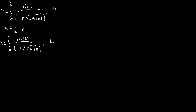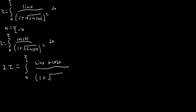So if we solve for 2i we're going to get the integral from 0 to pi over 2 of sine x plus cosine x, all over 1 plus square root of sine of 2x, squared, dx.